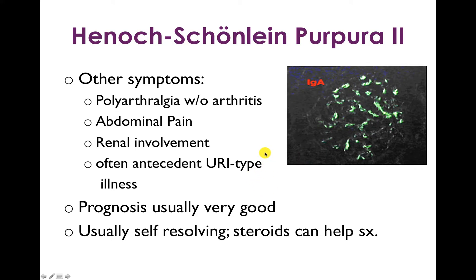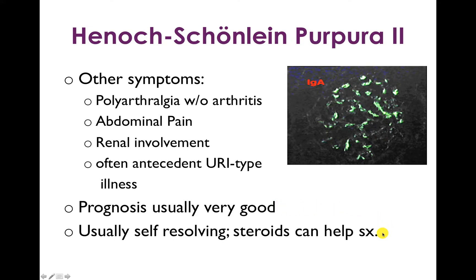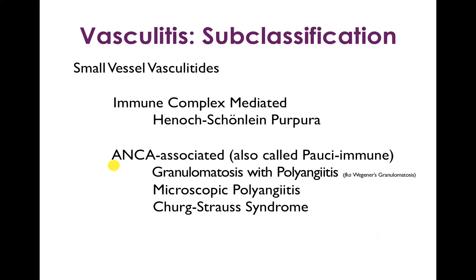Interestingly, Henoch-Schönlein purpura is often preceded by a URI-type illness. If this sounds familiar from the renal unit, it should, because there's a lot of overlap with IgA nephropathy — the difference is that with IgA nephropathy, you don't really get the purpura. The good news is the prognosis is usually very good and it's usually self-resolving, although if symptoms are very severe, steroids can help.